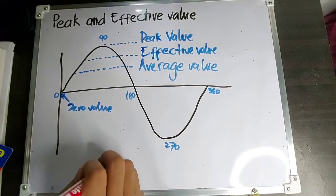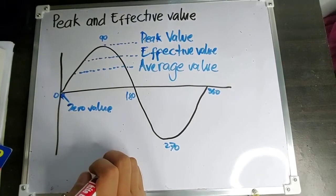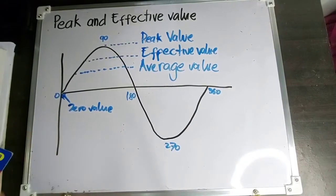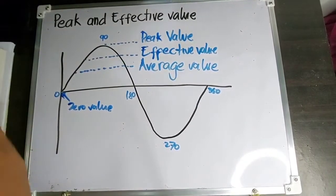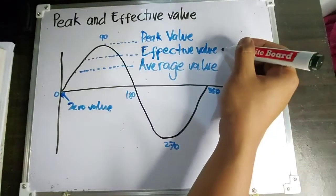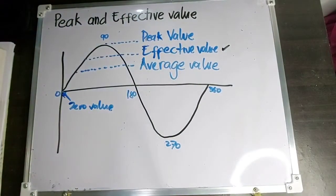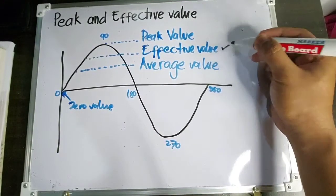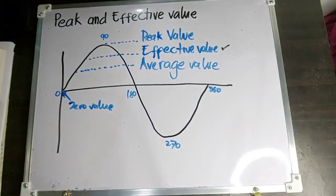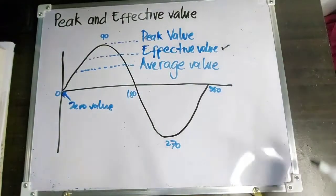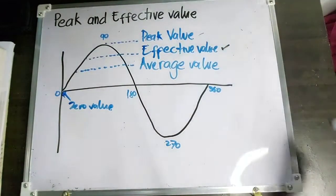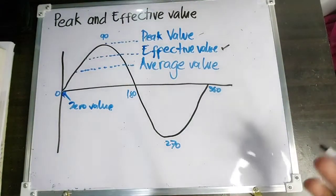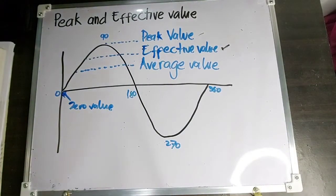Sa ating multitester, halimbawa nagsukat ka ng voltage — kapag nagsukat ka ng voltage, ang nasusukat mo lang is yung kanyang effective value. Hindi mo nasusukat yung peak value. Sa voltmeter ganyan. Pero ngayon, yung may mga clampometer, nasusukat na nyo yung peak value. Yung clampometer natin, nasusukat na yung peak value sa mga makabagong clampometer.